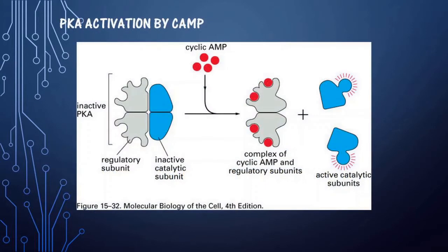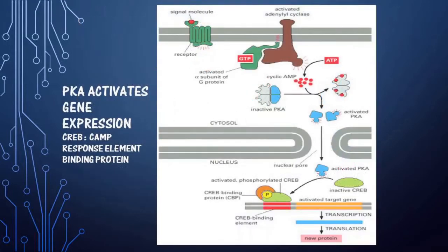The inactive PKA has two regulatory subunits and two inactive catalytic subunits. In the presence of cyclic AMP, the regulatory subunits dissociate from the catalytic subunits and the released catalytic subunit becomes active. PKA then activates gene expression.